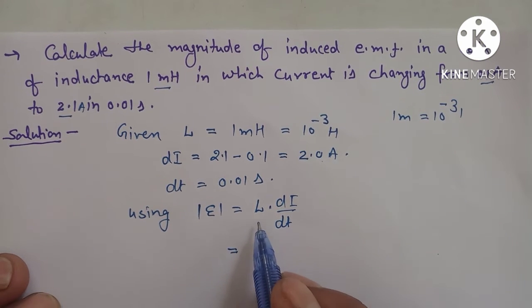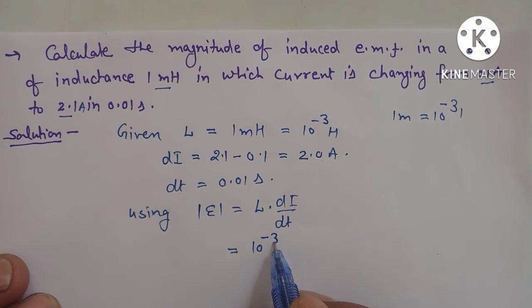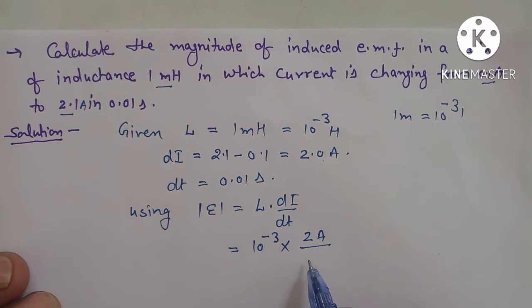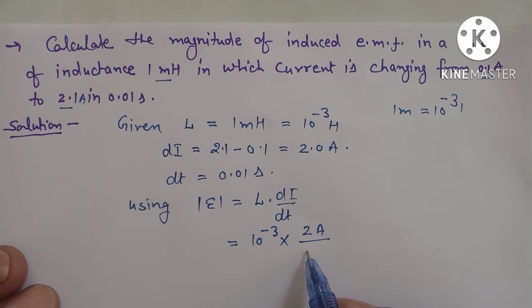So this is equal to, here we place the value of L, that is 10 raised to power minus 3, multiplied by dI by dt. dI is 2 ampere and dt is 0.01 second.